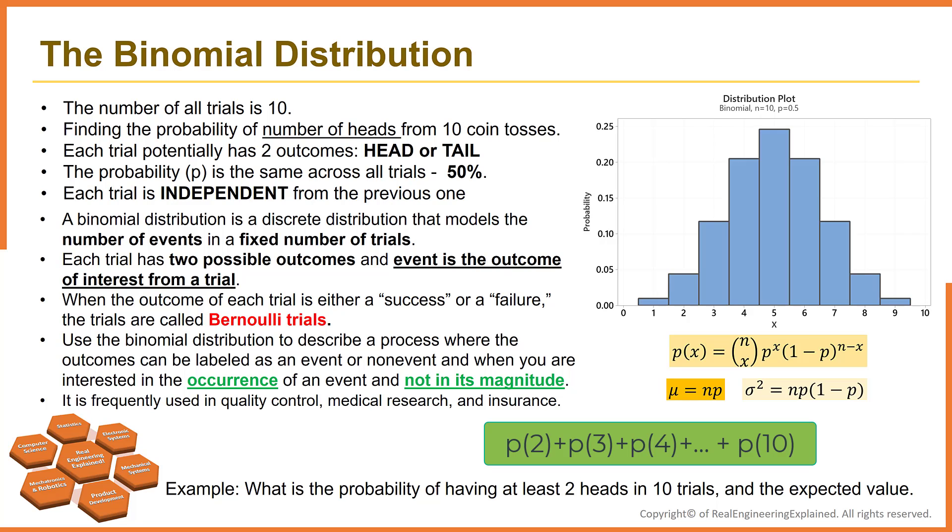Or we can say the summation of all bin heights. You might be asked to find the expected number of heads in the sample, which means finding the mean of all trials. Simply, 10 multiply to 0.5, which is 5 heads in total for 10 trials.